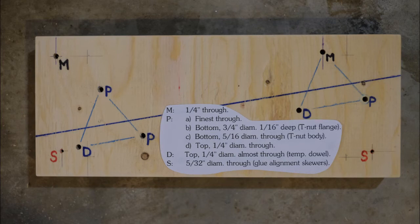The holes marked S are for the alignment skewers. They'll be useful when the boards are glued. They're just bamboo barbecue skewers, five thirty seconds inch in diameter. I forgot a couple more are needed above the slope. Look for them a little bit later in the video. They're going to be a little bit to the right of the m-holes.